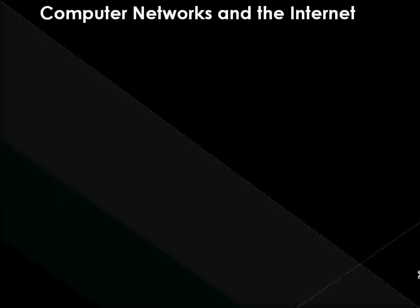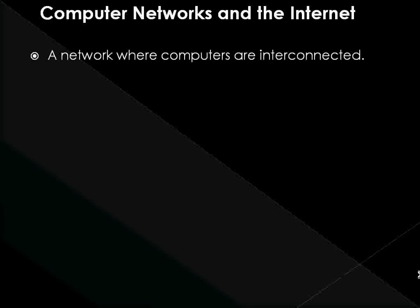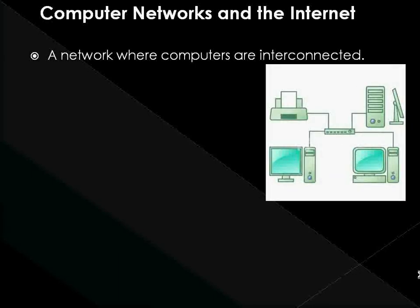Computer networks and the internet. A computer network is a network where computers are interconnected. The network allows computers to communicate with each other and share resources and information. Connectivity represents the possibility for communicating between different computers. This process is achieved by networking — that is, connecting computers together using connecting devices like cables and other specialized devices — and setting up strict protocols for communication to take place.